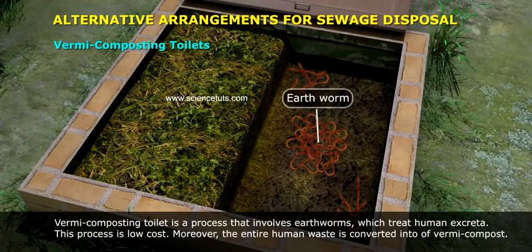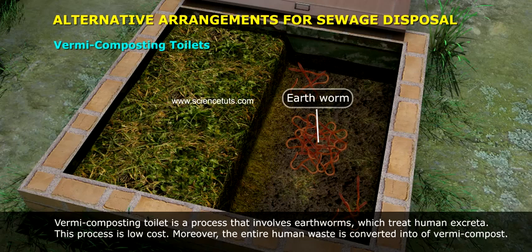Vermi composting toilets: vermi composting is a process that involves earthworms which treat human excreta. This process is low cost. Moreover, the entire human waste is converted into vermi composted material.